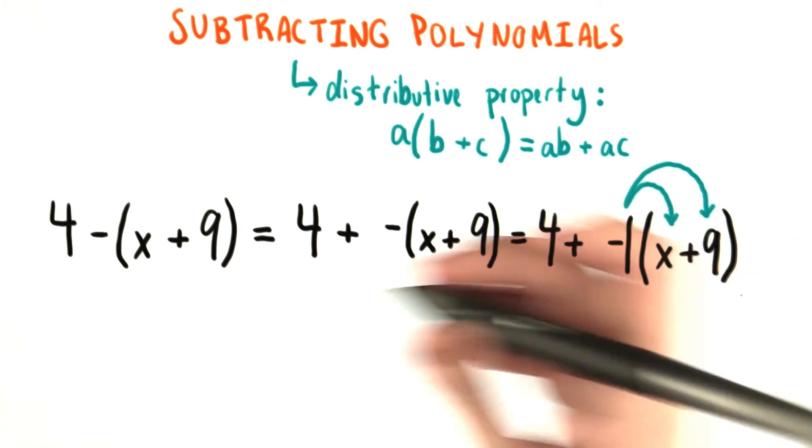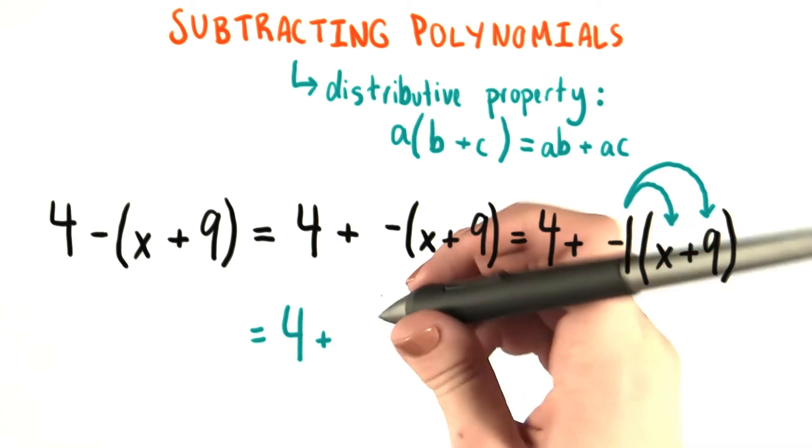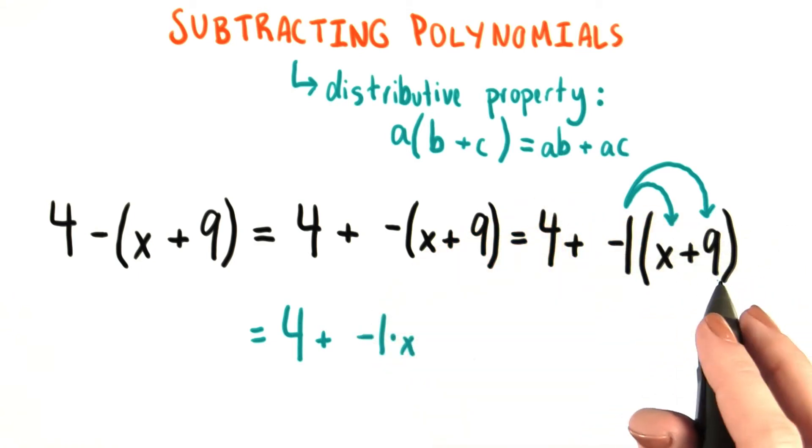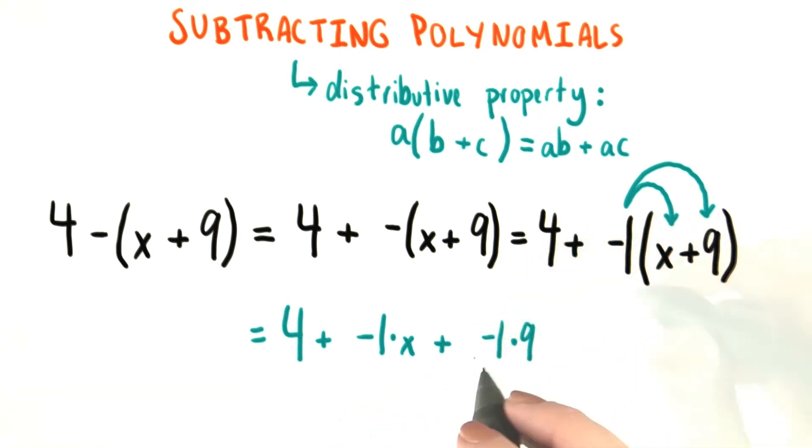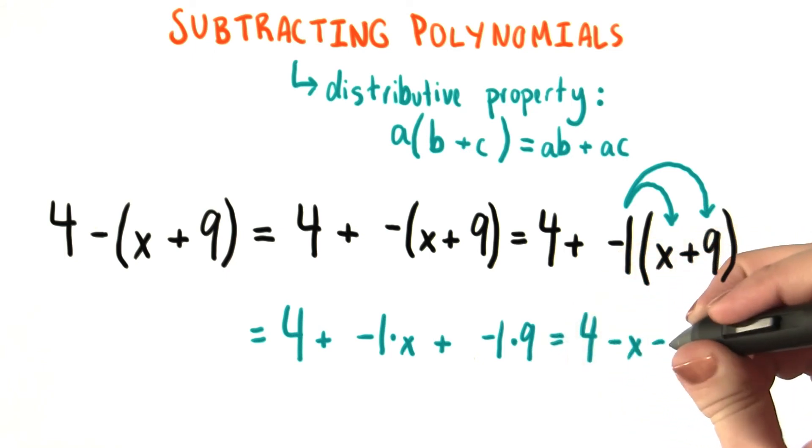So if we use that property in this case, we leave our 4 plus, and then we have negative 1 times x. Write the sign that's between the two terms inside the parentheses, negative 1 times 9. However, we know that negative 1 times x is just minus x, and negative 1 times 9 is also just minus 9. So we end up with 4 minus x minus 9.